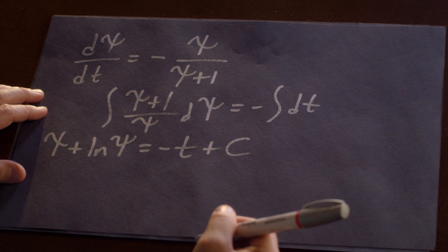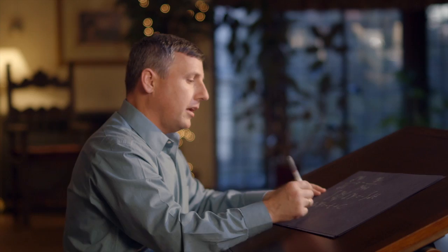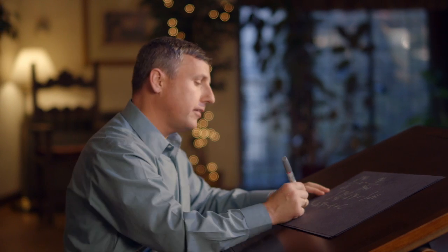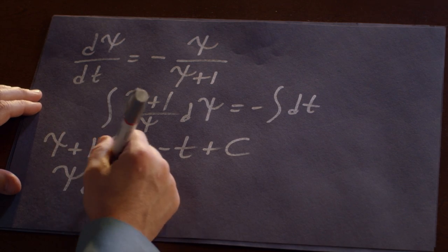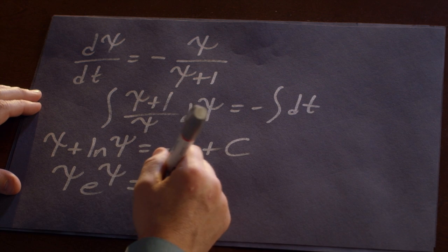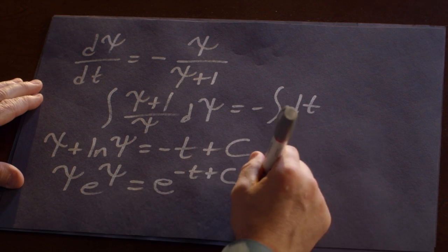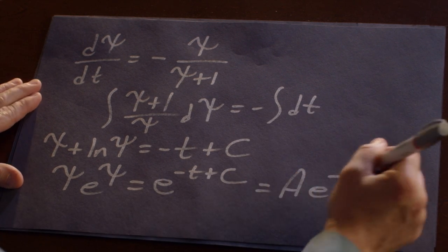And c is an arbitrary constant of integration. If we go ahead and simplify this by exponentiating both sides, we end up with this nonlinear equation. And if we take that constant of integration and bring it down from the exponential, we can write it in a simpler form.